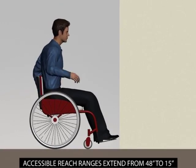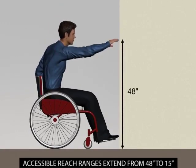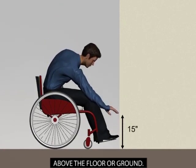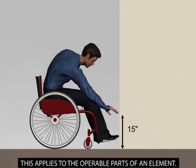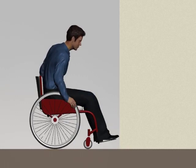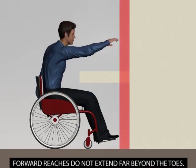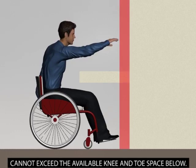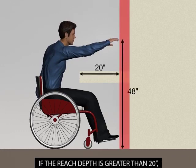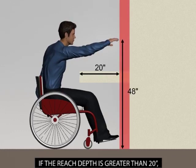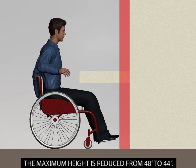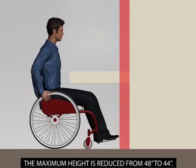Accessible reach ranges extend from 48 inches to 15 inches above the floor or ground. This applies to the operable parts of an element. Forward reaches do not extend far beyond the toes. For this reason, the reach depth over an object cannot exceed the available knee and toe space below. If the reach depth is greater than 20 inches, the maximum height is reduced from 48 inches to 44 inches.